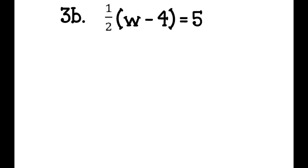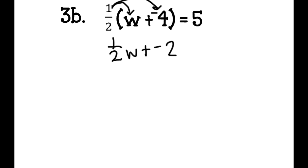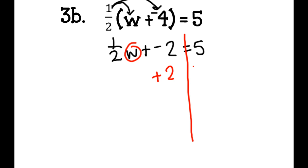Problem 3b: I have 1 half times the quantity of w minus 4 equals 5. I add the opposite. 1 half times w is 1 half w, plus 1 half times negative 4 is negative 2, equals 5. I draw separate sides of my equation and circle the variable. To undo the addition or subtraction first, I add a positive 2 to both sides — negative 2 and 2 cancel out. I have 1 half w equals 5 plus 2, which is 7.